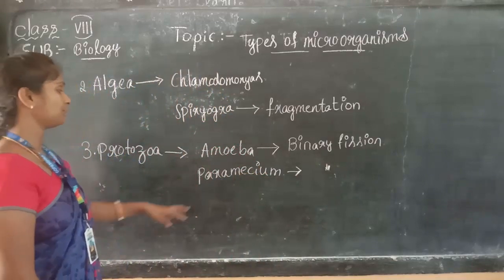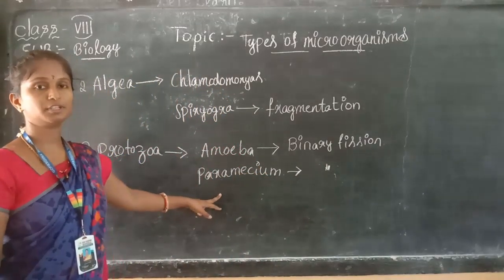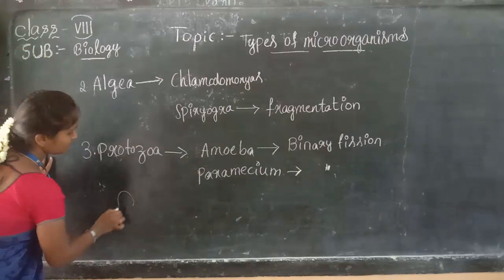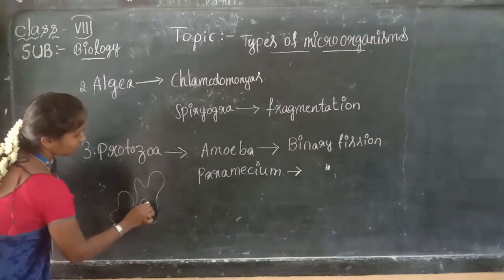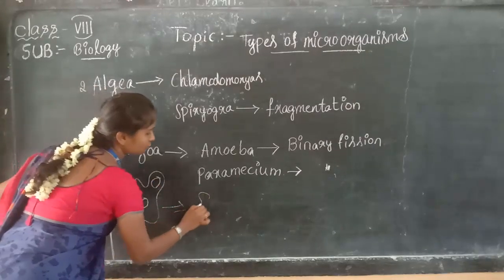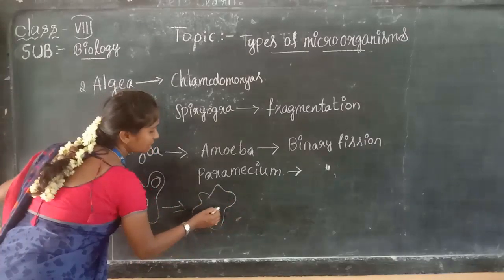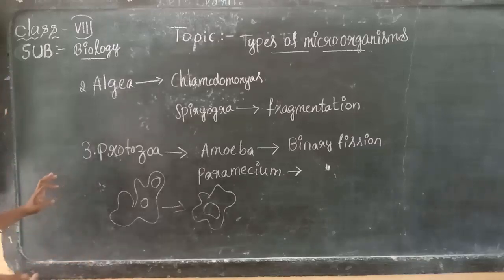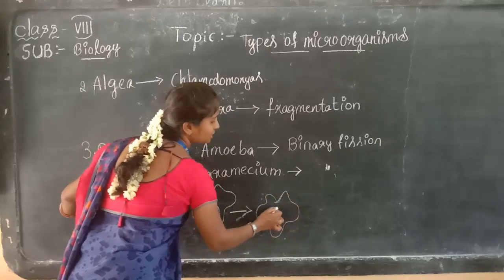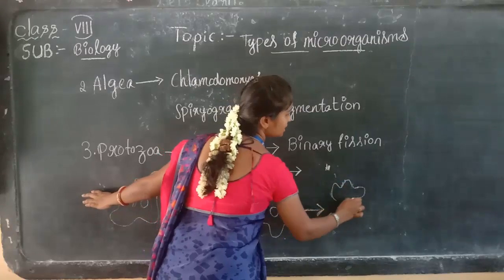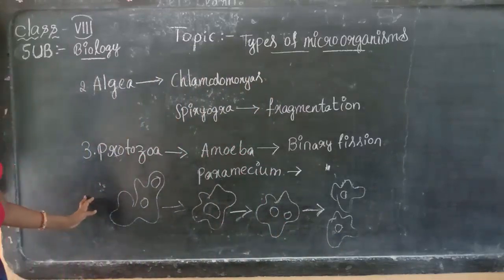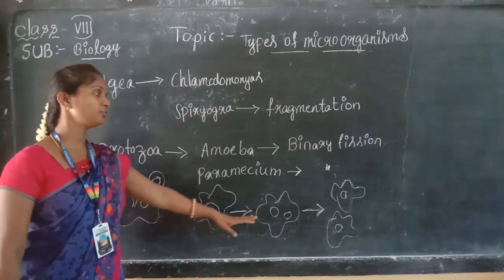In the last class we saw how the paramecium is going to be divided at the reproductive stage. Now I am going to tell about the amoeba reproductive stage. Amoeba has an irregular shape and it has only a nucleus. How is it going to divide? The nucleus present in the amoeba will get doubled in size. It starts doubling, and finally the nucleus will be divided into two. After dividing the nucleus, the amoeba slowly starts to divide with the help of the cytoplasm, and it gets divided. This is the binary fission of amoeba.